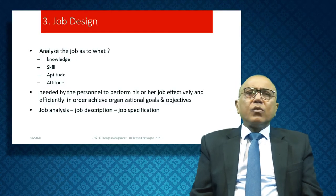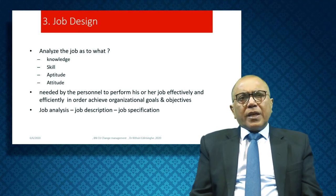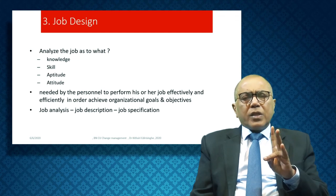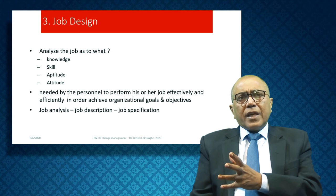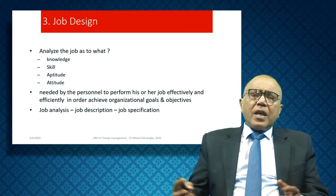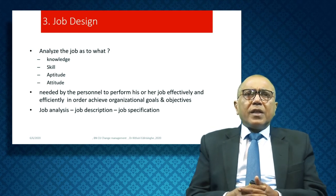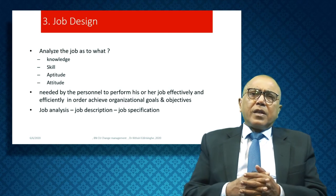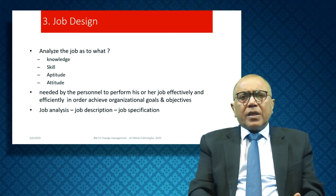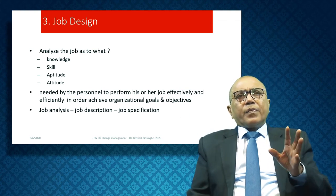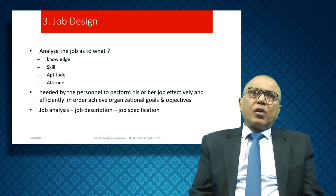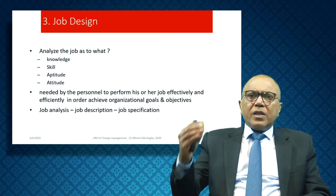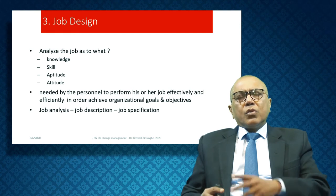Job design is about a person sitting in one position: what knowledge, skills, aptitude, and attitude do they need? Knowledge includes their qualification and training. Skill is the experience they have. Attitude is their positive orientation towards work. Aptitude is the expandability of a person — how much potential they have to move to a different level. To make a job design, you first analyze the job, look at the scope of work, write it down in a job description, and specify exactly what they are supposed to do.